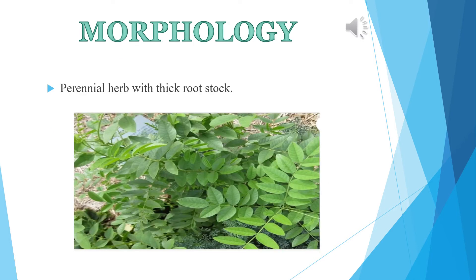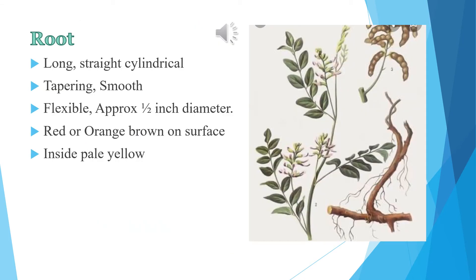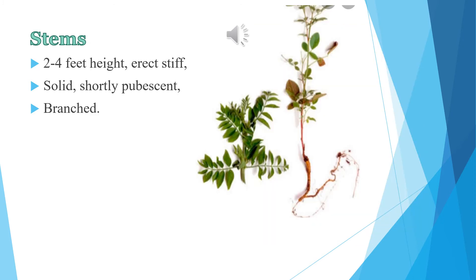Morphology. In this picture, we can see that this is a weak plant. It is a perennial herb with a thick root stock. The roots are long, straight, and cylindrical — tapering and smooth, flexible, and approximately half an inch in diameter. The color of the root outer surface is orange-brown and inside the color is pale yellow. The stems are erect, stiff, 2 to 4 feet or more in height, solid, strongly straight, shortly pubescent, and branched.